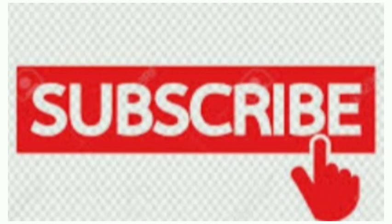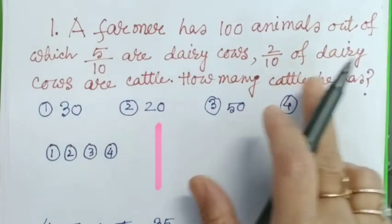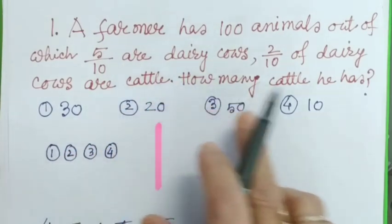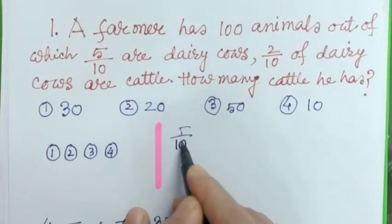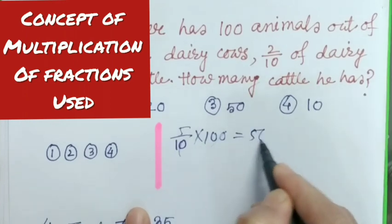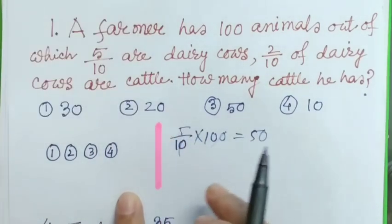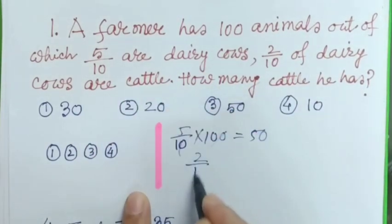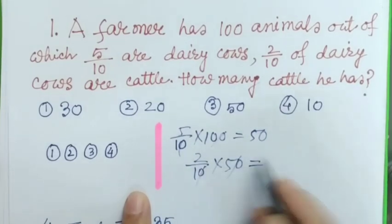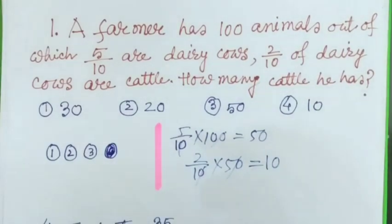Without wasting time, let's start with our MCQ session. One, two, three, start. Number one: A farmer has 100 animals, out of which 5/10 are dairy cows, 2/10 of dairy cows are cattle. How many cattle does he have? 5/10 out of 100 means 5/10 of 100, that means 5/10 into 100, which equals 50. Now here maximum students make mistakes in this part. Remember, 2/10 of dairy cows means 2/10 into 50, not 100. So this equals 10. So our answer is 4.